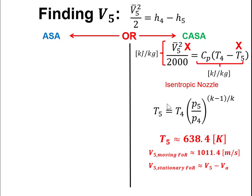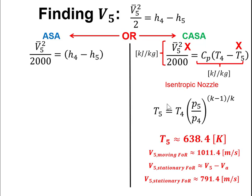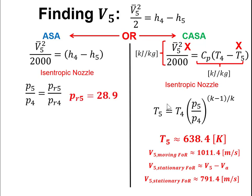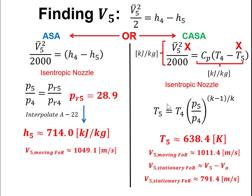Using T5, I find the velocity in the moving frame of reference. To get the velocity in the stationary frame of reference I subtract V_a, giving V5 just over 790 meters per second. For the variable specific heat analysis, using isentropic nozzle pressure ratios gives P_R5 = 28.9. I interpolate on Table A-22 to find h5, compute the velocity in the moving frame, then convert to the stationary frame. The two methods give slightly different answers due to the differing assumptions.